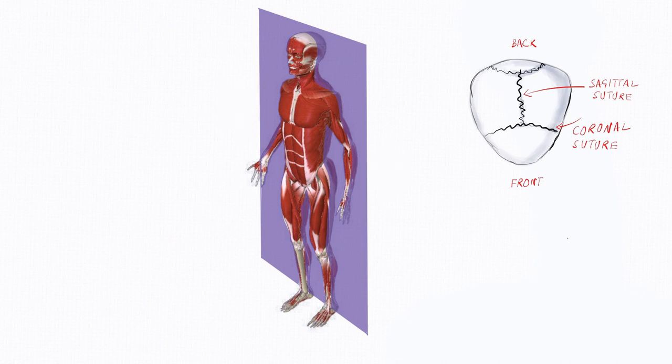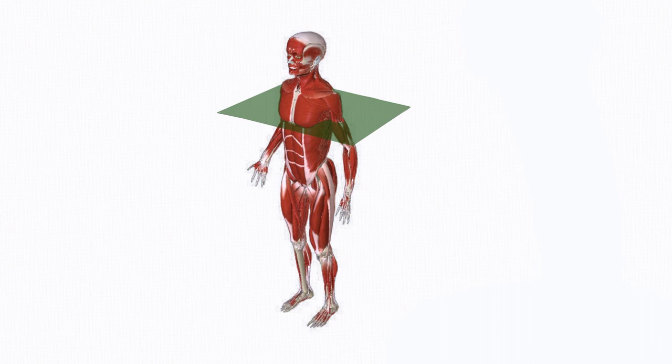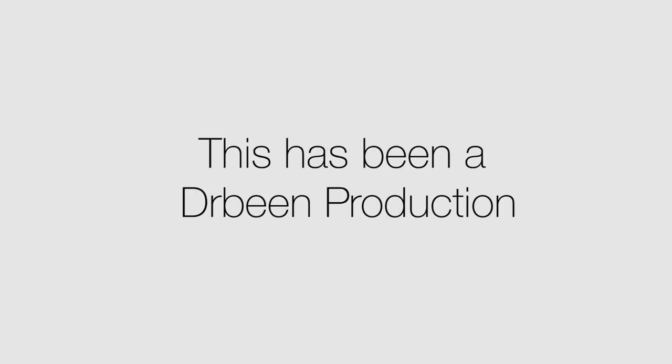It is perpendicular to the median and sagittal planes. Lastly is the transverse plane. This plane is horizontal. It is also perpendicular to all the other planes. It cuts the body into a superior and inferior half, or an upper and lower half. Don't forget that the transverse plane is the only horizontal plane.